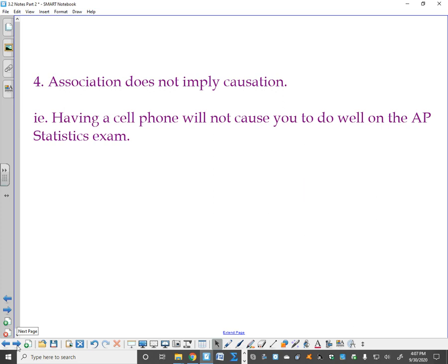And then this is the big one. Association does not imply causation. Just because two variables are associated, they have a relationship, they have a correlation, does not mean that one causes the other. We will use the word cause, but not yet. Having a cell phone will not cause you to do well in the AP stats exam. However, there is a relationship between people who have a cell phone and people who do well in the stats exam. But one does not cause the other. Cause is a very powerful word in the world of statistics. And you are not armed yet to drop that word.